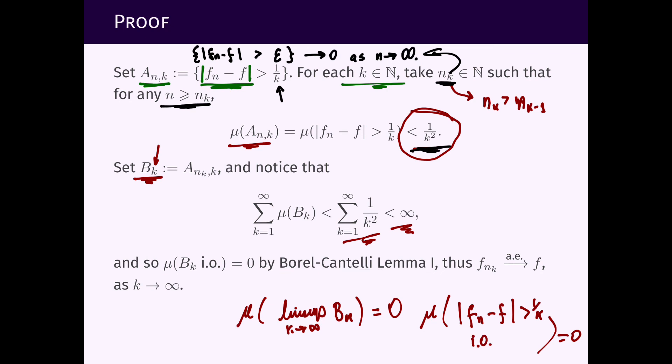And that implies that then f_{n_k} converges to f as k converges to infinity, because this measure, this 1 over k here will be below epsilon for every epsilon positive as we take k large enough, this will be below epsilon. So since this measure, the probability that we are larger than any epsilon infinitely often is zero, by this equivalence between convergence almost everywhere and the measure of this set being zero, we can conclude that f_n converges almost everywhere to f.